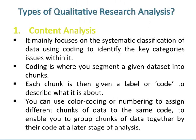Types of qualitative research analysis. Number one is content analysis. It mainly focuses on the systematic classification of data using coding to identify the key categories and issues within it. Coding is where you segment a given data set into chunks, and each chunk is then given a label or code to describe what it is about. You can use color coding or numbering to assign different chunks of data to the same code, to enable you to group chunks of data together by their code at a later stage of analysis.